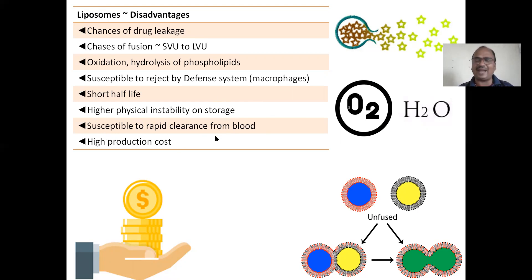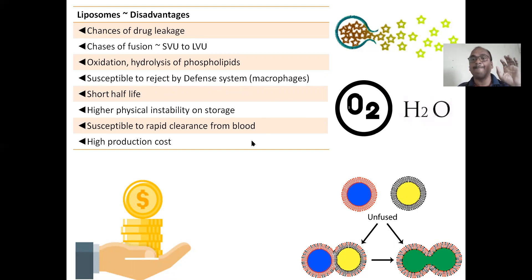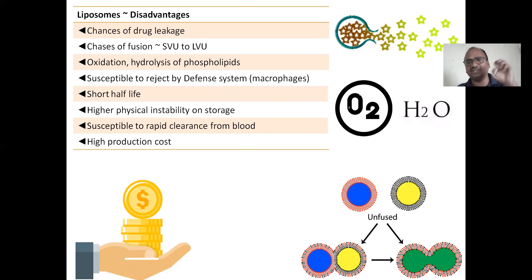Susceptible to rapid clearance from the blood, and high production costs. Macrophages may eat the liposomes — macrophages think these liposomes are foreign bodies and antigens, so they start engulfing them, resulting in short half-life.